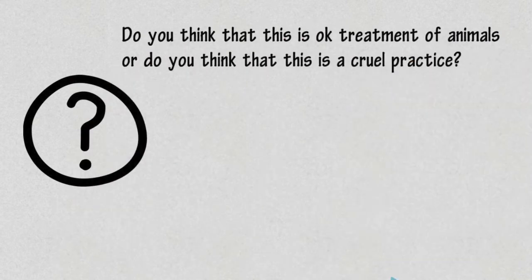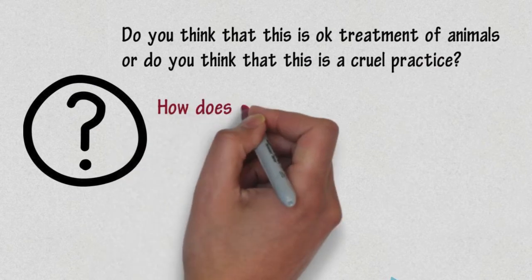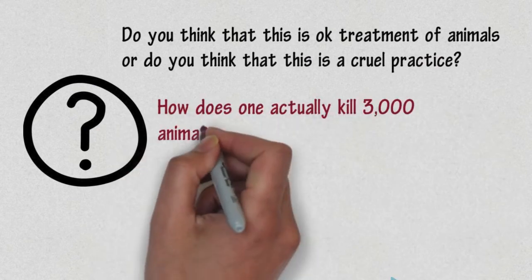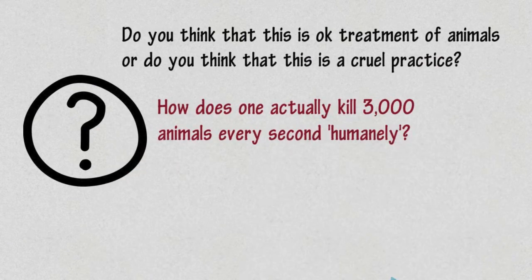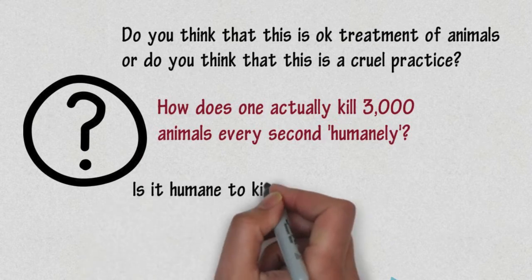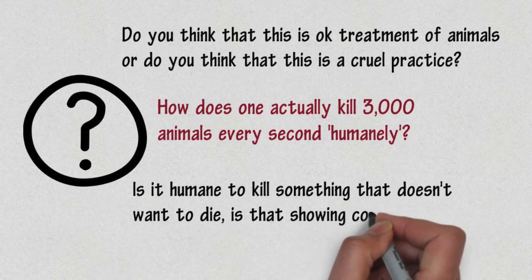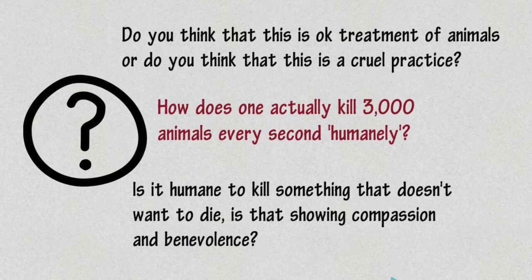Ask yourself another question: How does one actually kill 3000 animals every second humanely? Or how is this actually humane? Is killing something that doesn't want to die showing compassion and benevolence?